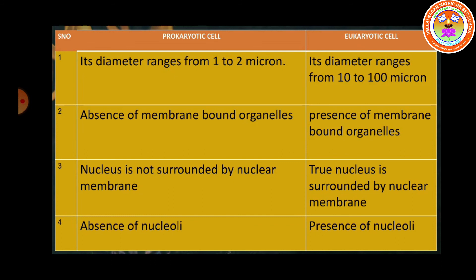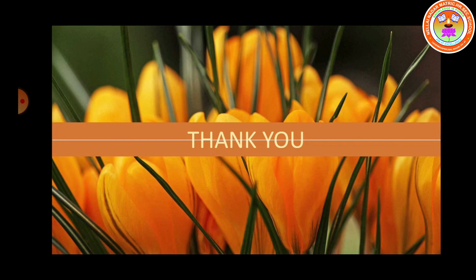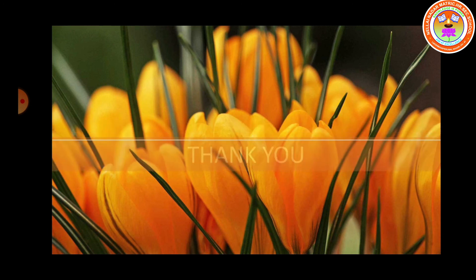The last point of difference: prokaryotic cells have an absence of nucleoli within the nucleus, whereas eukaryotic cells have a presence of nucleoli. So we come to the end of today's session on the types of cells — prokaryotic and eukaryotic. Thank you children, see you in the next session.